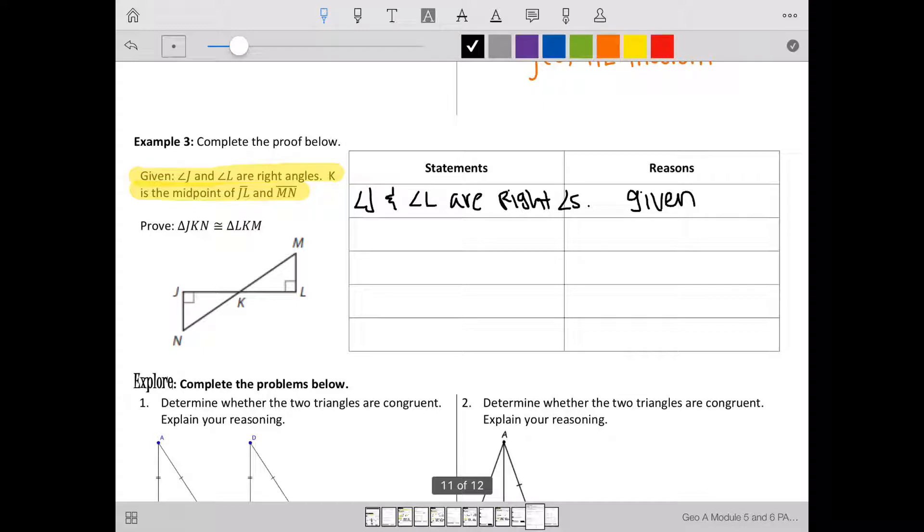And K is the midpoint of JL and MN, which is also given.